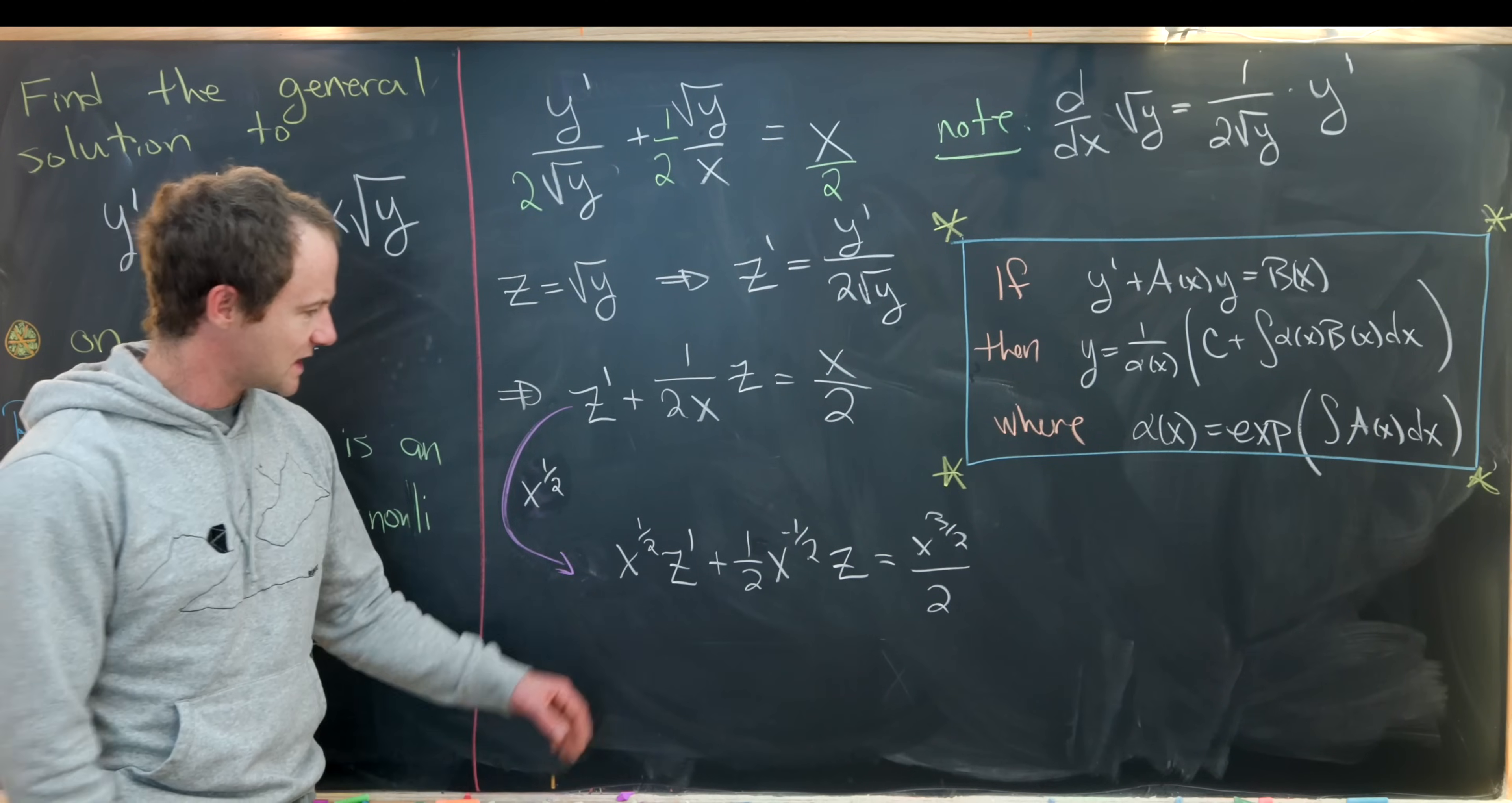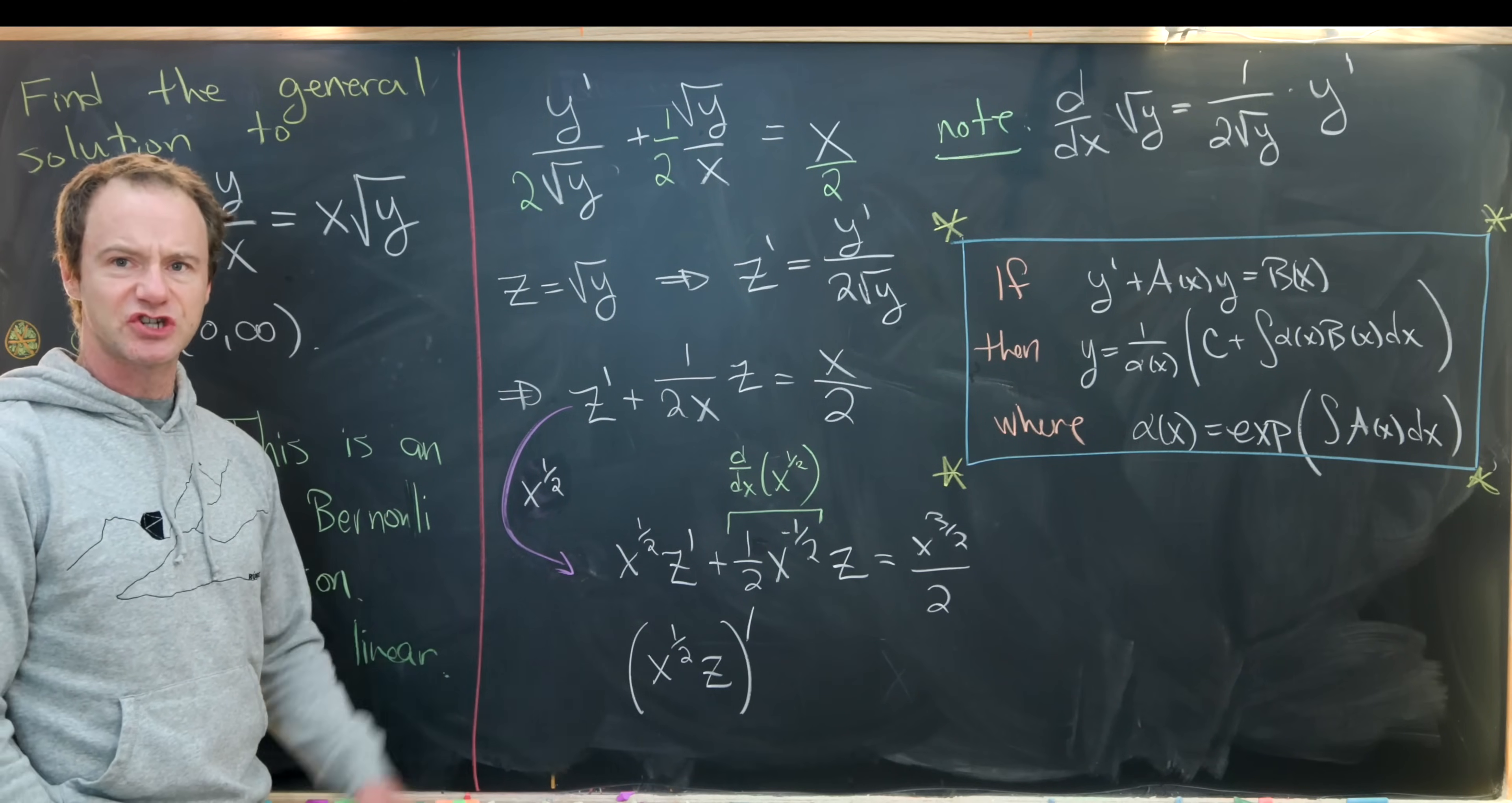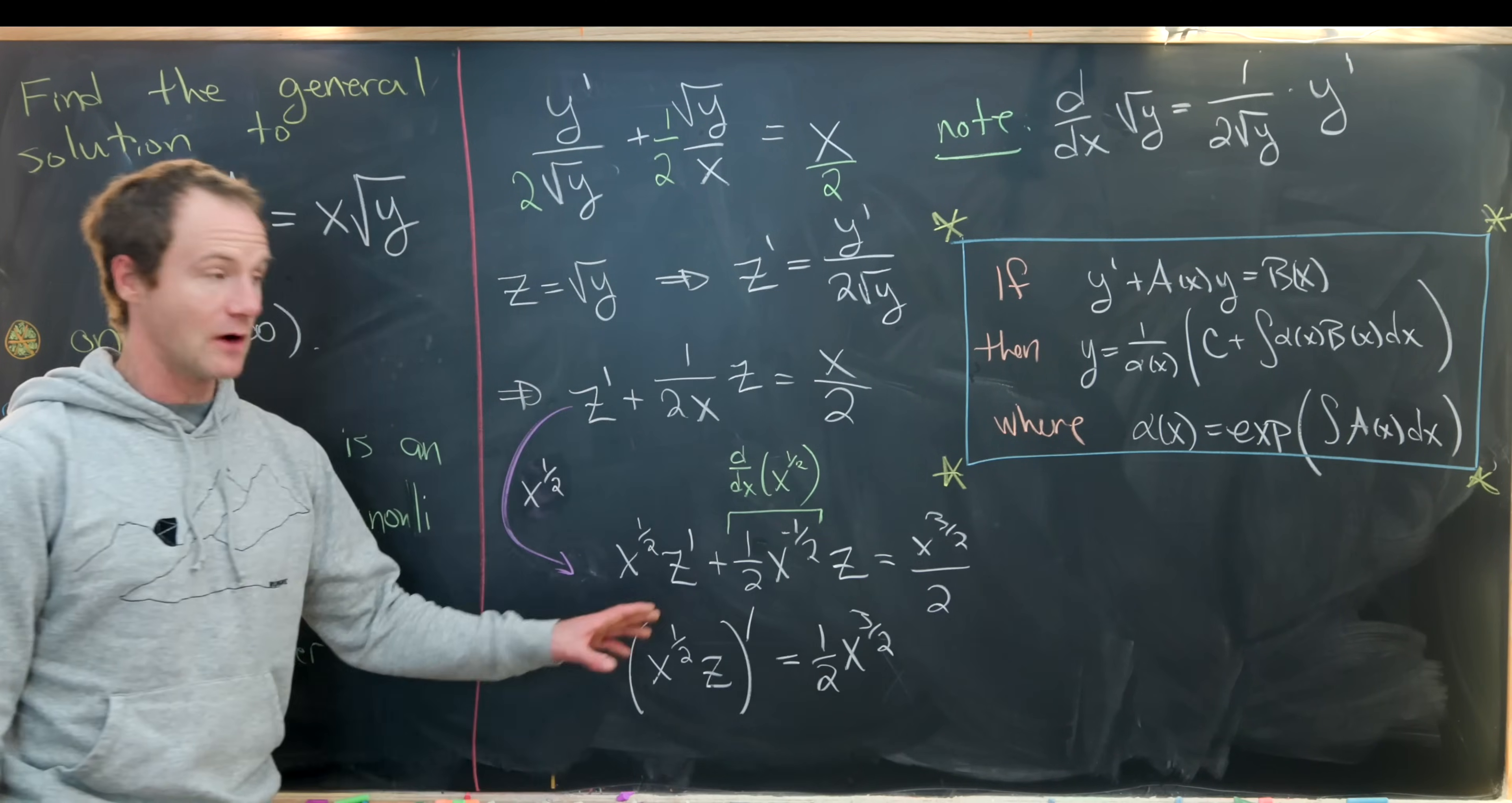Now let's notice that this object right here is exactly the derivative with respect to x of x to the half. We have a product rule situation here. In fact, what we have is x to the half times z quantity prime. Let's just check that real quick: if we take the derivative of z and hold x to the half the same, we get this first term. Then if we take the derivative of x to the half and hold z constant, we get this term. That's good to see. So we have this equals one half x to the three halves.